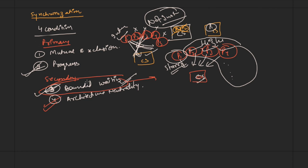Architecture neutrality means there should be no assumptions related to the hardware, processor, or speed of the processor. All proposed solutions should be independent of the architecture of the system. Every solution must follow the primary conditions first; if they do not follow the primary conditions, we do not check the secondary ones. All four conditions must be met for a solution to be successful.